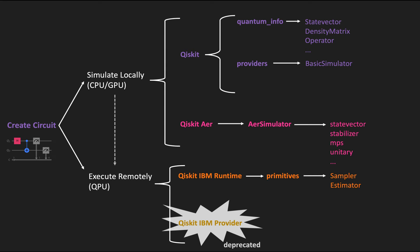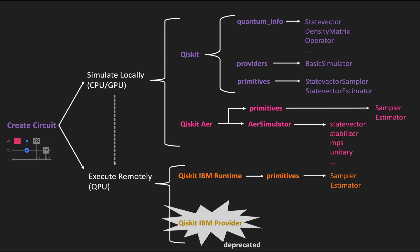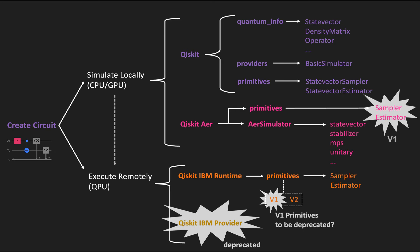IBM has introduced the primitives concept also in the Qiskit package. Similarly, Qiskit Aer has some primitives, but unfortunately there are two versions: version 1, which were the original ones when this concept was first introduced, and these are now being deprecated and replaced by version 2. The primitives available in Qiskit Aer are the old versions, so we will not be covering those. Hopefully version 2 primitives will be integrated in Qiskit Aer in the near future. In the meantime, we can use another feature that was recently introduced that allows us to use the Qiskit IBM Runtime interface to also simulate circuits by passing some of the simulators instead of using the package's native primitives.